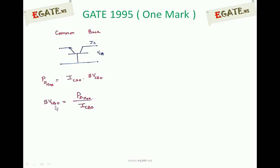From this, BVCBO is written as PD maximum by ICBO. If the same transistor with same power dissipation is configured in common emitter with base open.